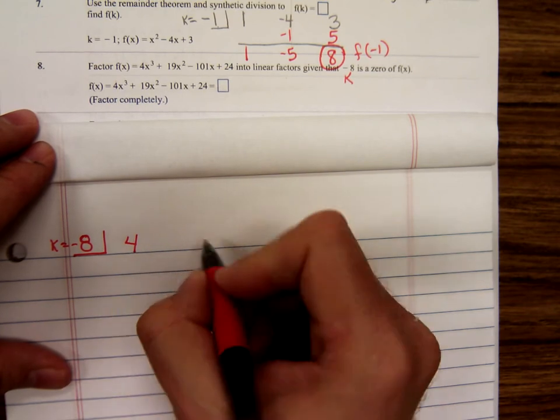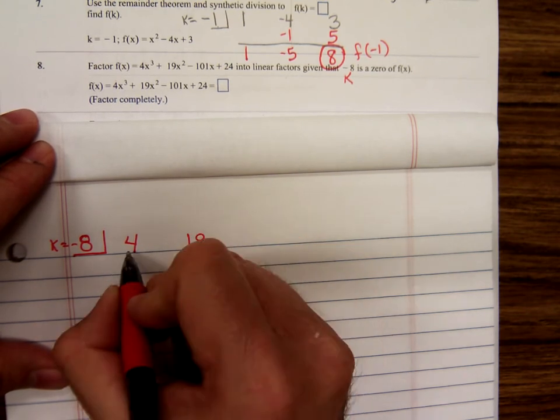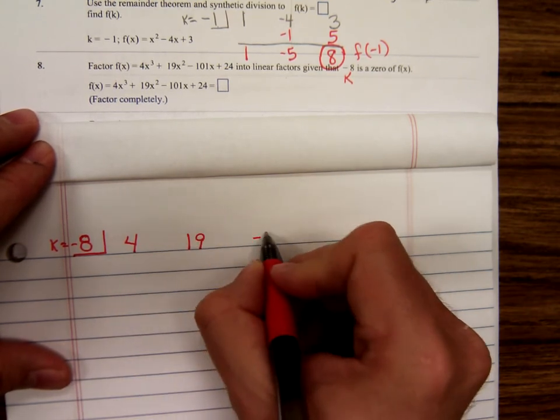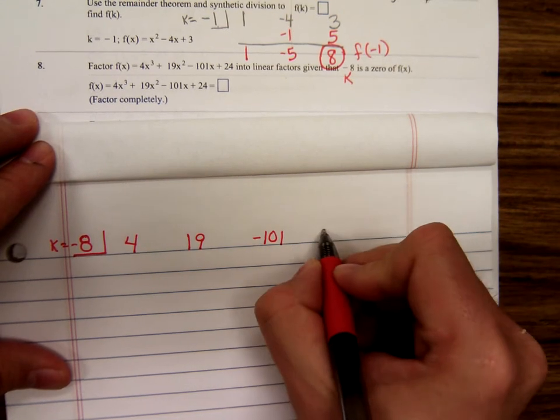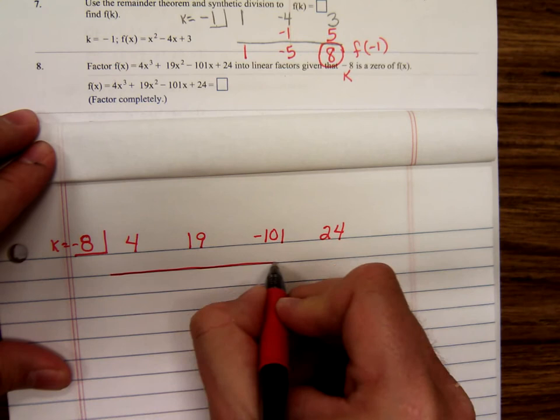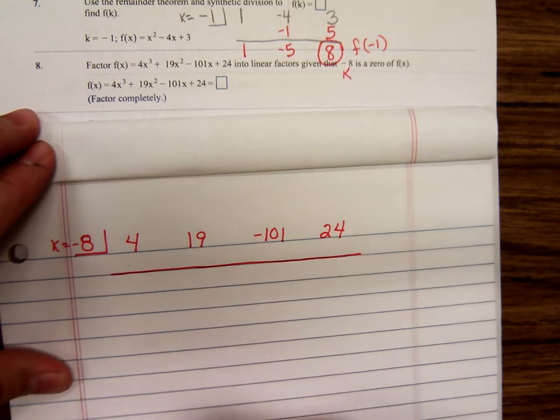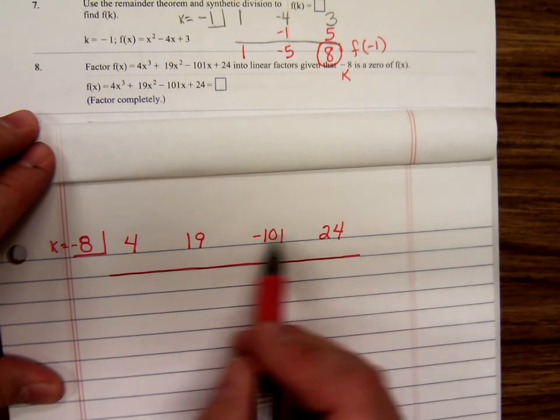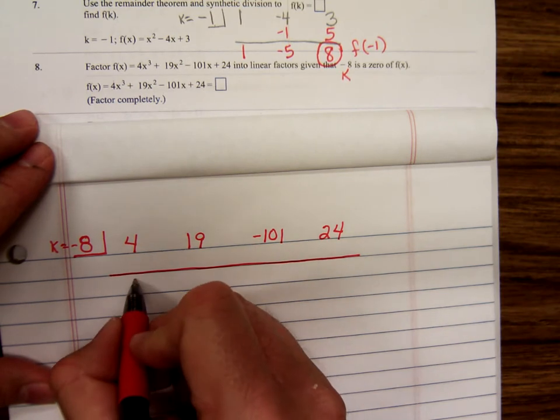Negative eight is k. Then 4, 19, x cubed, x squared, x, no x's at all. So, we didn't have to put any zeros up there to hold the spaces. So carry down the four.